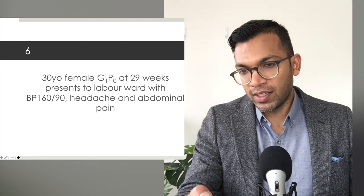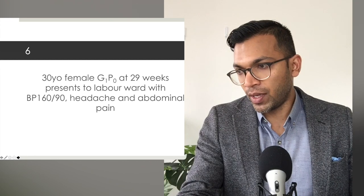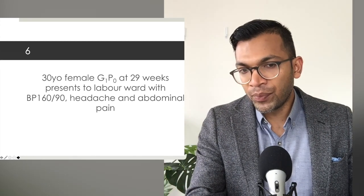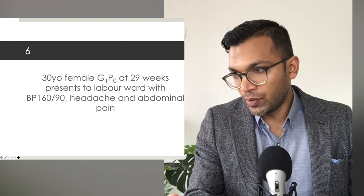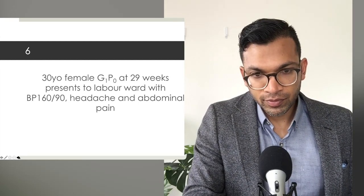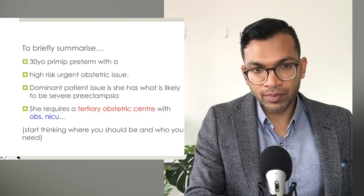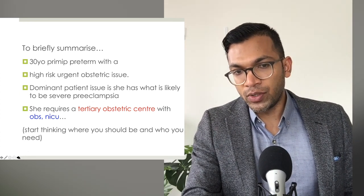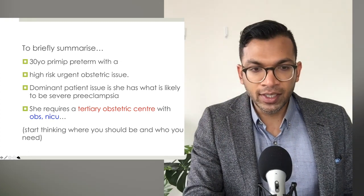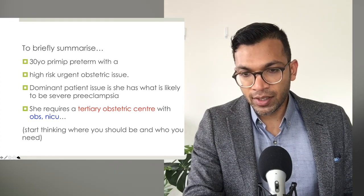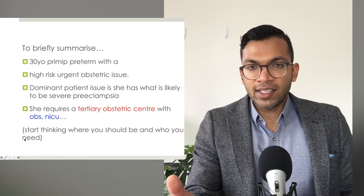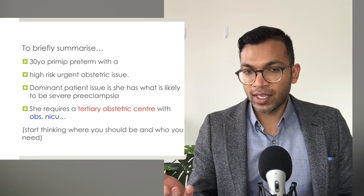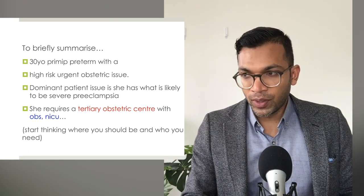You've identified it as pre-eclampsia - that's a fair call given it satisfies the criteria. You've recognised it's a premature baby so you want other people involved. Ideally this patient should be in a tertiary centre with a NICU on standby for a 29-week baby. My consultant-level summary: 30-year-old primiparous preterm, high-risk urgent obstetric issue. Dominant patient issue is likely severe pre-eclampsia. Who do I need? Obstetrics and NICU. Where do I need to be? A tertiary obstetric centre.